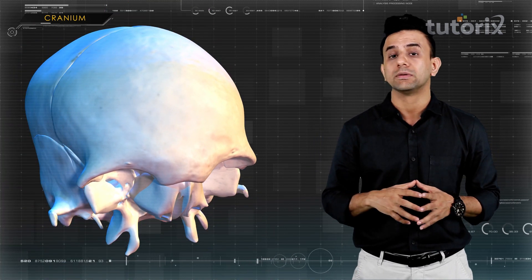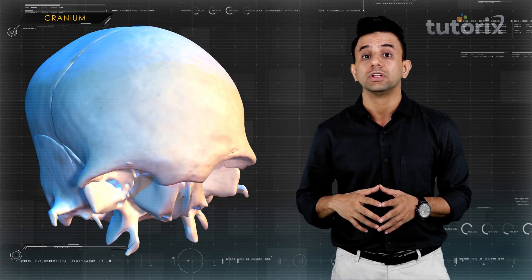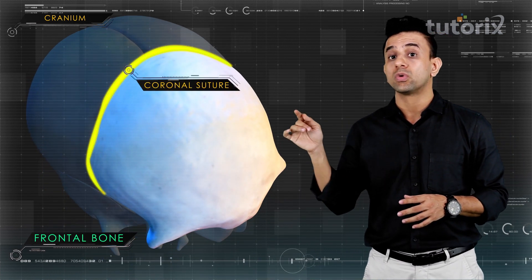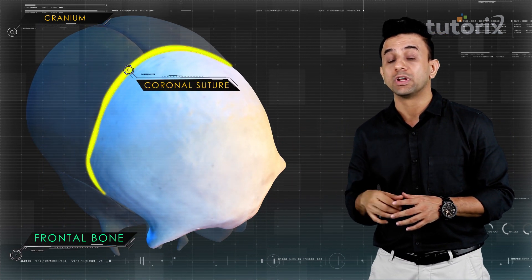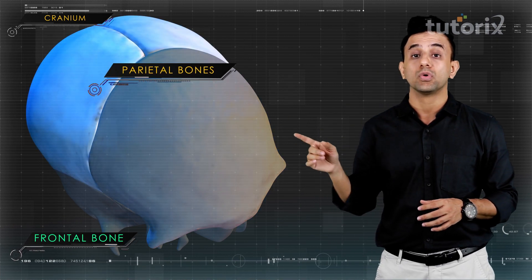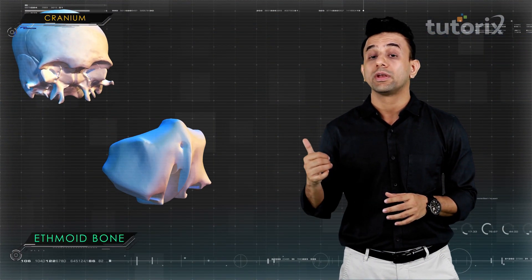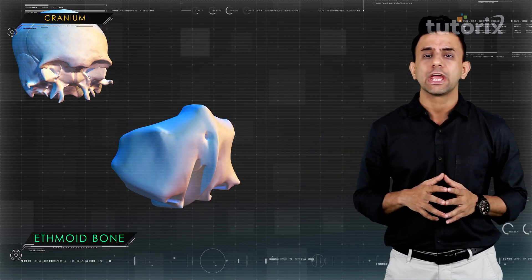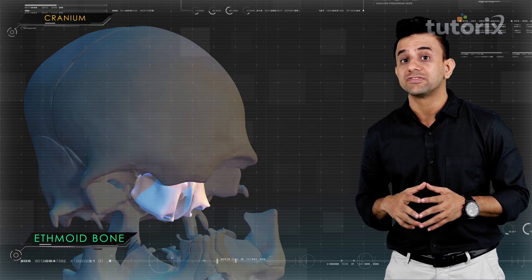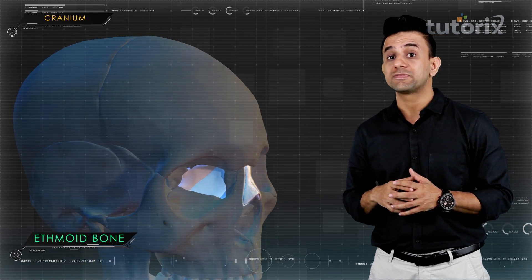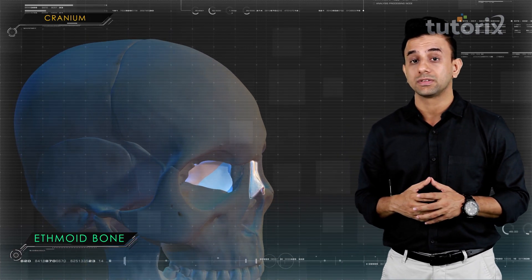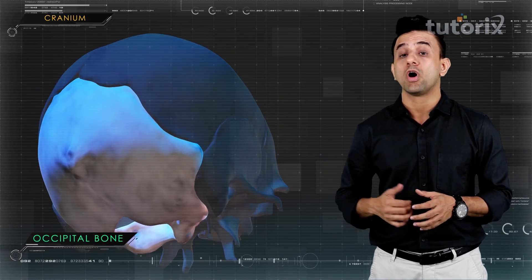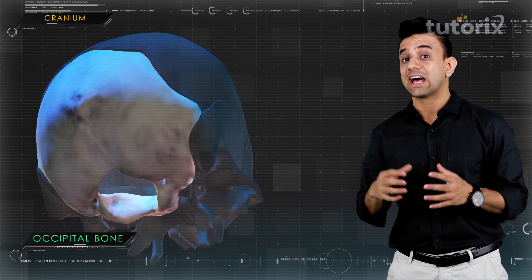The frontal bone extends from the forehead to the coronal suture and is attached to the parietal bone. The ethmoid bone is small and rectangular in shape, lying within the eye cavity just behind the bridge of the nose.